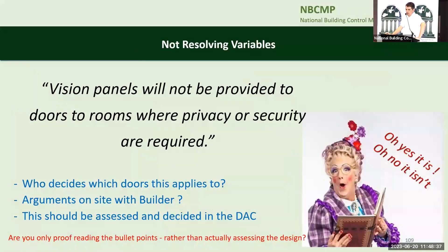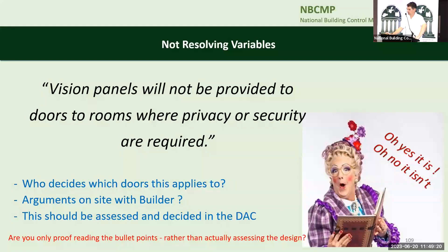Non-resolved variables: 'vision panels will not be provided to doors of rooms where privacy or security are required.' That's what TGD says — all fair and good, but we're supposed to be assessing the design. The question should be: are you providing one or not? We're not just checking that he repeated the bullet points faithfully. Who decides — will the builder decide on site? If that sentence was accepted and you went in and there's no vision panel, the builder says 'security reasons' or 'privacy reasons,' and you end up with an argument on site. That should be assessed in the application. The designer should tell you whether he's putting one in and then you can agree or disagree.